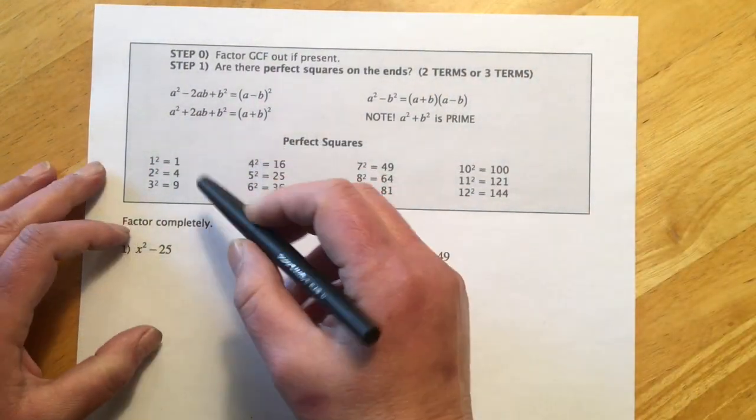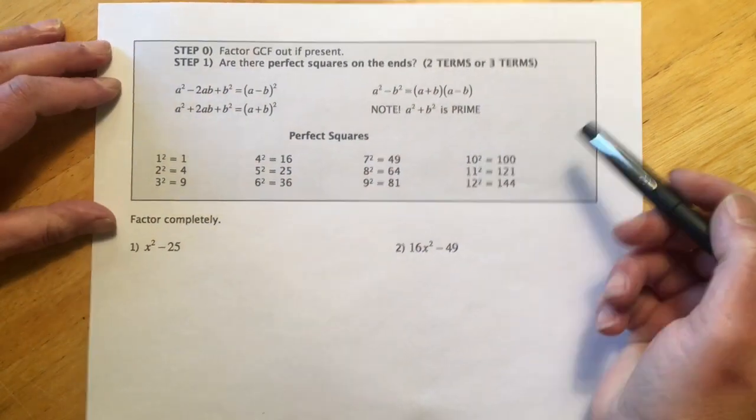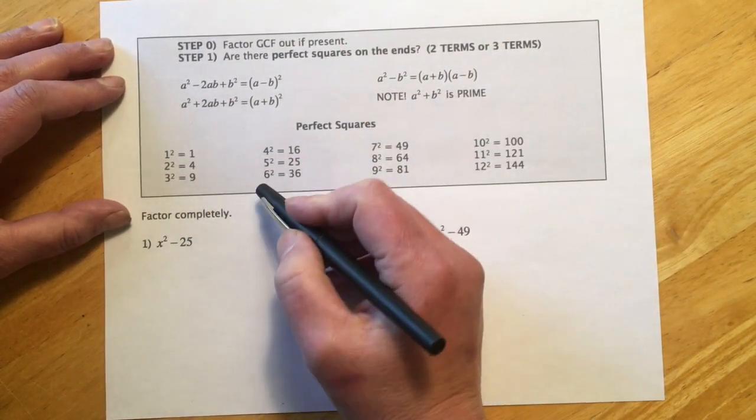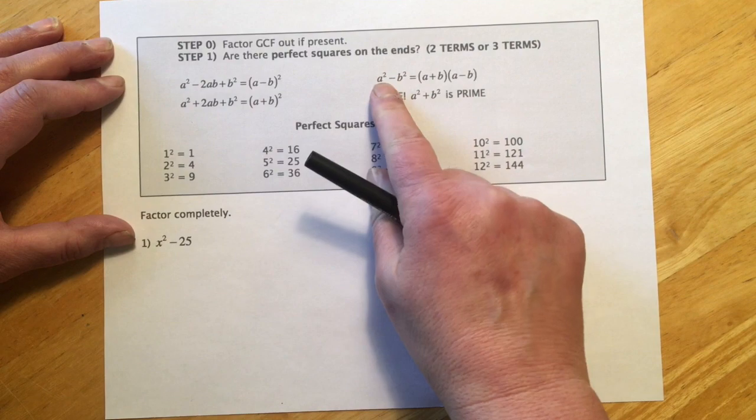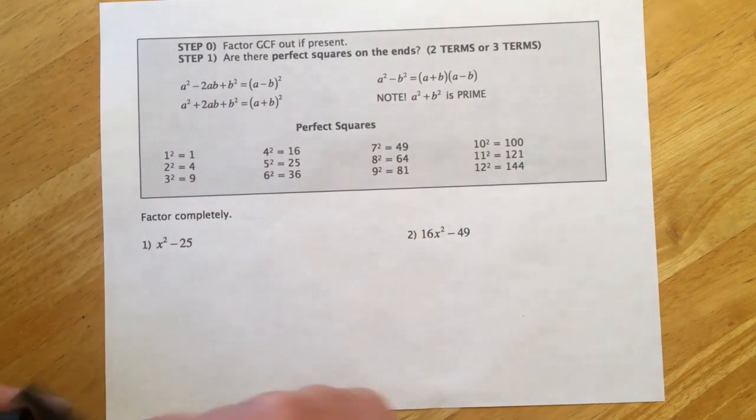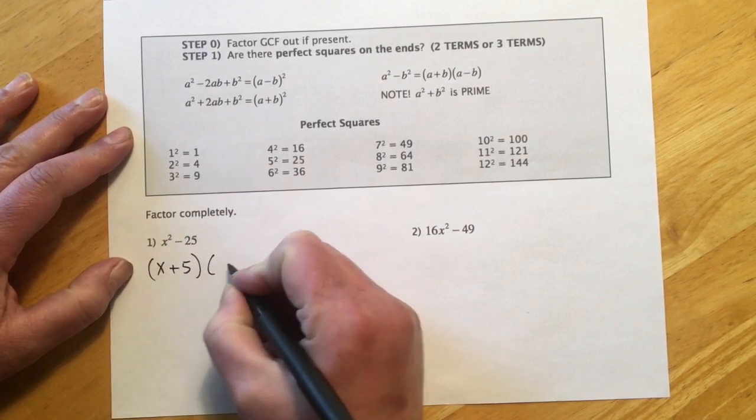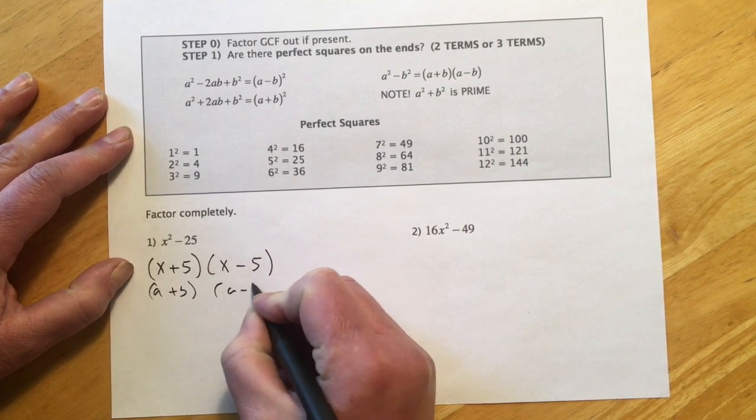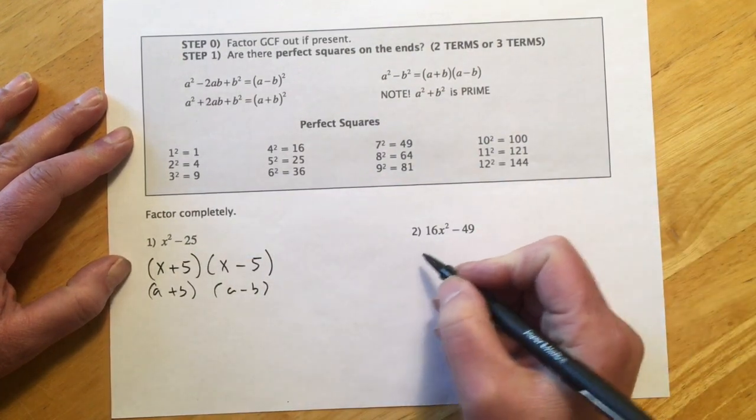Section starts off with these formulas right here, and then I made a list of the perfect squares. We're going to see the squared side and they're going to break down to something squared. Here we've got two terms, x² - 25. That's going to be an a² - b² deal. 25 is a perfect square, it's on our list, so it breaks down to 5's. This is x + 5, that's our a + b, and then x - 5, our a - b. That's how all these two terms of squares are going to go.